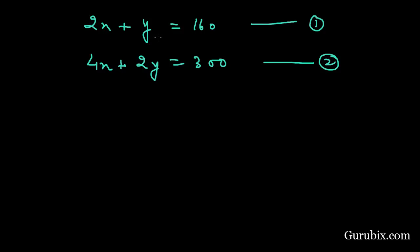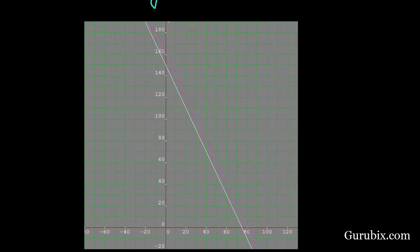Now we shall draw the graph of these two equations. This is the graph of two equations and here we observe that this line is of 2x plus y equals 160 and this line is of 4x plus 2y equals 300. We observe that both the lines are parallel so there is no solution of this pair of linear equations.